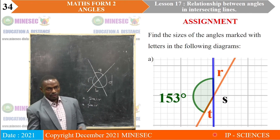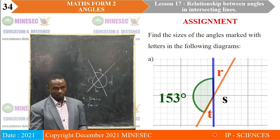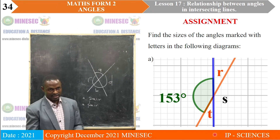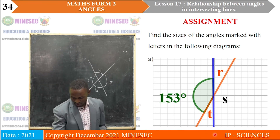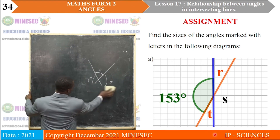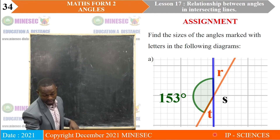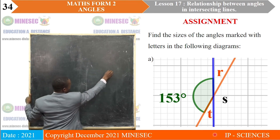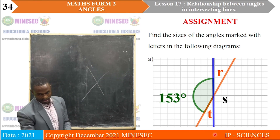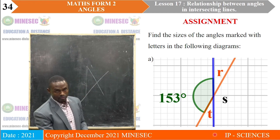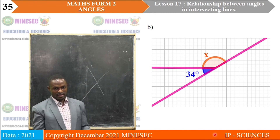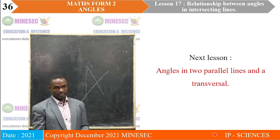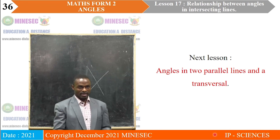To practice what we have learned today, take home some assignment questions: find the sizes of the angles marked with letters in the following diagrams — diagram A and diagram B, each with different angles to be found. We have come to the end of this lesson. Our next lesson will be on Angles in Two Parallel Lines and a Transversal.